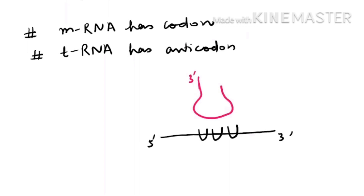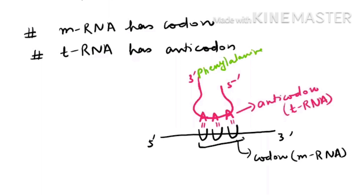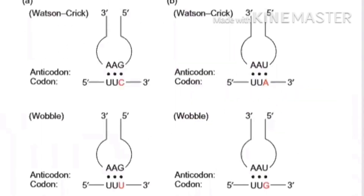Looking at the transfer RNA diagram — the anticodon will be complementary to the codon, so they do complementary base pairing. This is how the tRNA reads the codon and transfers the amino acid it is carrying at its 3' end. So phenylalanine is attached at the 3' end. These three bases on messenger RNA are the codon, and the three complementary bases on transfer RNA are the anticodon.